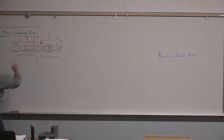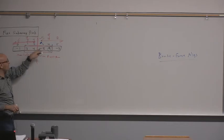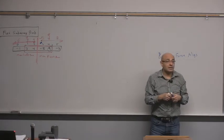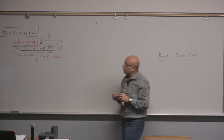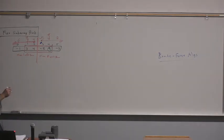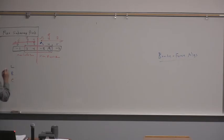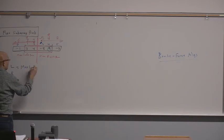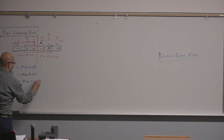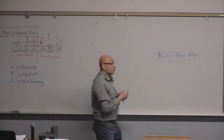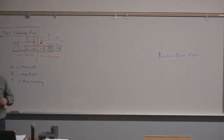On both sides, go from center to left and center to right, finding the maximum sum on each side. Then add the two sums together. But that isn't necessarily the solution — I have to compare three different solutions: maximum left, maximum right, and maximum crossing. The best of the three is going to be the solution.